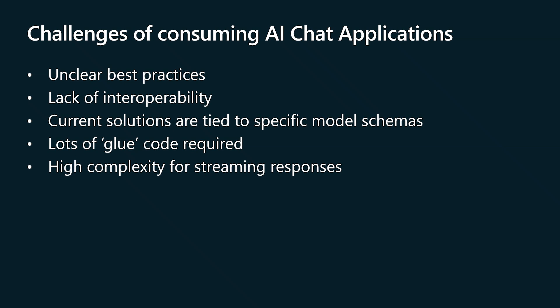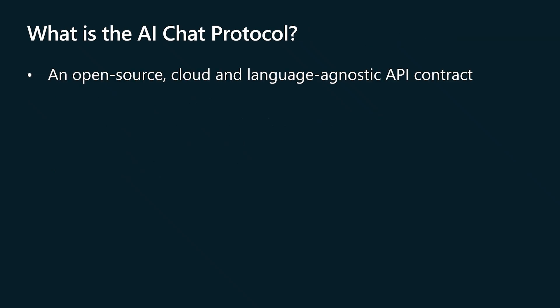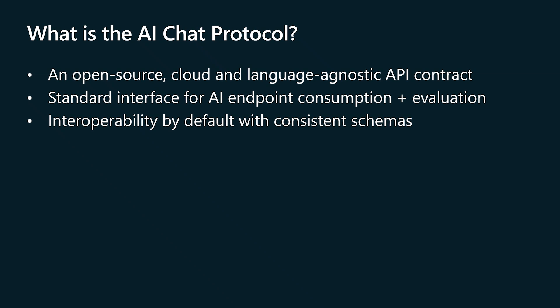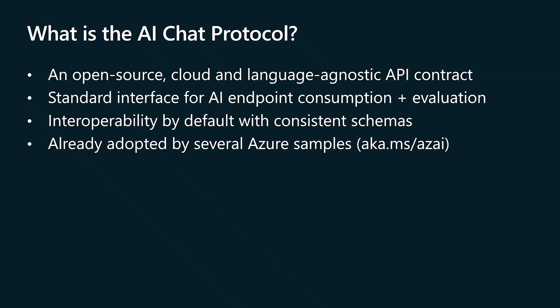We see all of these as large challenges for developers today, which is why we've developed the AI chat protocol API spec. It's an open source, cloud, and language-agnostic API contract designed to be a standard interface for AI endpoint consumption and evaluation. If your middle-tier endpoint adheres to this API spec, you can consistently and easily consume and run evaluations on your AI backends with no extra cost. It's already adopted by several Azure samples with active adoption efforts across more of our products at Microsoft.